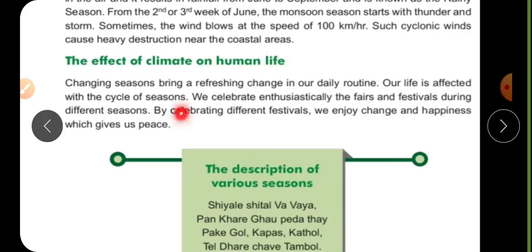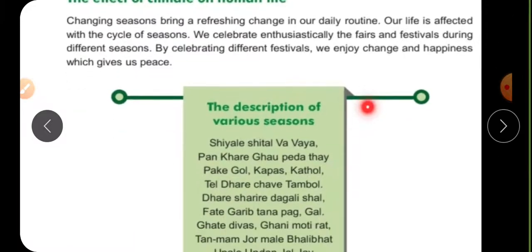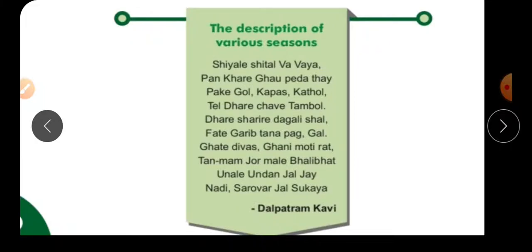By celebrating different festivals we enjoy change and happiness, which gives us peace. We celebrate festivals like Holi, Makar Sankranti — flying kites, making karanji and chakli — just for our happiness. The description of various seasons shows how different activities, foods, and celebrations are associated with each season.